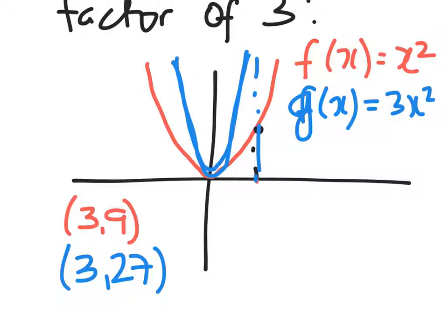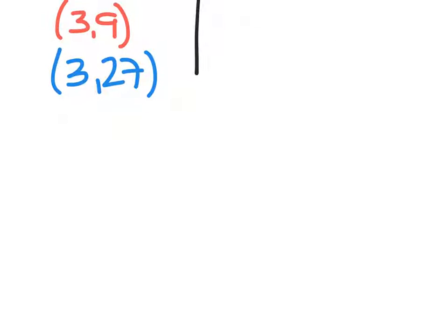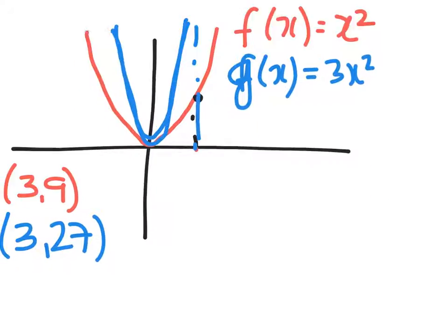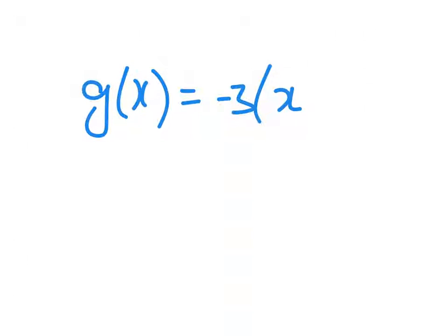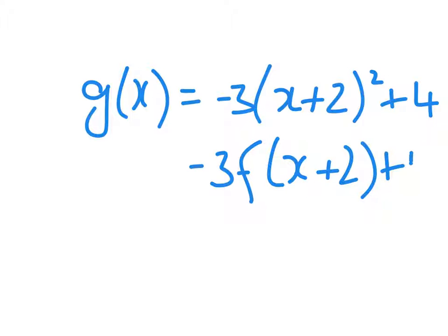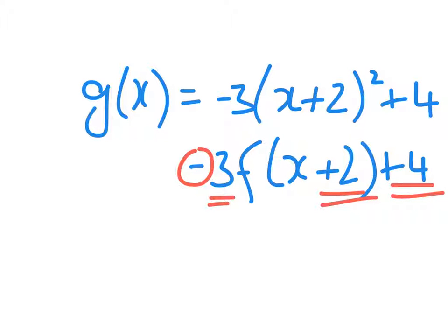So when you look back at it and it asks you to acknowledge what transformations were made to the parent function — g of x equals minus 3 times x plus 2 squared plus 4, or equivalently minus 3f of x plus 2 plus 4 — this number here meant we went left by 2, this number here meant it went up by 4, the minus flipped it upside down, and the 3 stretched it. So we moved it 2 units left and 4 units up, then flipped it upside down, then applied a stretch to get our new function.